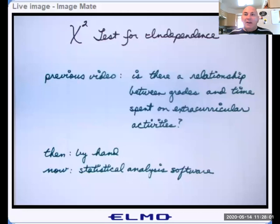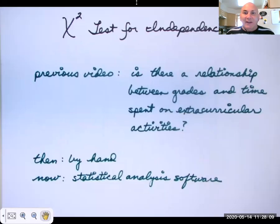In our last video we did a problem in which we wanted to see if there's a relationship between grades and time spent on extracurricular activities. We kind of did that by hand. Today I'm going to show you what it would look like if statistical analysis software did that problem for us. The software I'm going to use is called Minitab.